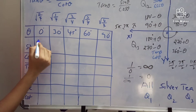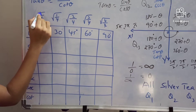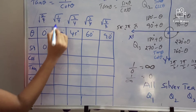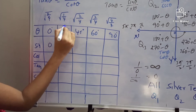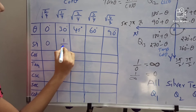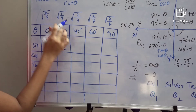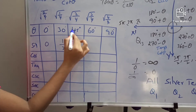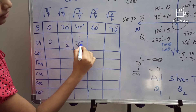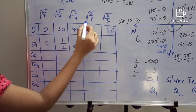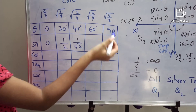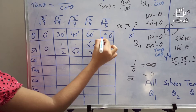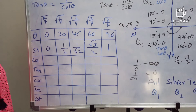Sin 0° = 0 (from root(0/4)). Sin 30° = 1/2 (from root(1/4)). Sin 45° = 1/root(2) (from root(2/4)). Sin 60° = root(3)/2 (from root(3/4), root(4) = 2). Sin 90° = 1 (from root(4/4), 4 cancels, root(1) = 1).